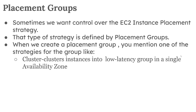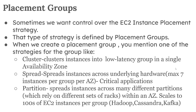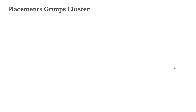In Cluster, EC2 instances are placed in a single cluster in a single Availability Zone. Next is Spread — spreads instances across underlying hardware, with a maximum of seven instances per group per Availability Zone, used for critical applications. Third is Partition — spreads instances across many different partitions within an Availability Zone, and can scale to hundreds of EC2 instances per group, used for systems like Hadoop, Cassandra, and Kafka.